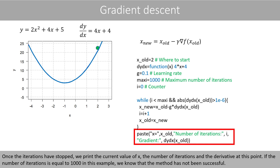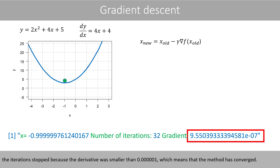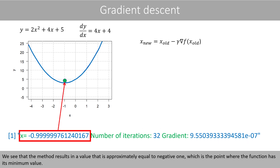Once the iterations have stopped, we print the current value of x, the number of iterations, and the derivative at this point. If the number of iterations is equal to 1000 in this example, we know that the method has not been successful. If we run this code, we see that after 32 iterations, the iterations stopped because the derivative was smaller than 0.00001, which means that the method has converged. We see that the method results in a value that is approximately equal to negative 1, which is the point where the function has its minimum value.